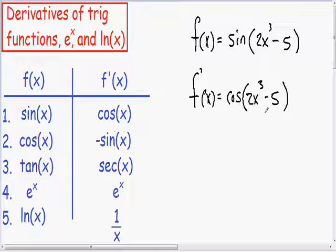And the only difference, the one last step that we have to do before we finish this derivative, is we need to multiply by the derivative of the inside of the parentheses. Effectively, we have to do the chain rule. We have to multiply by the derivative of the inside of the parentheses. So we have a 2x cubed minus 5 inside the parentheses.